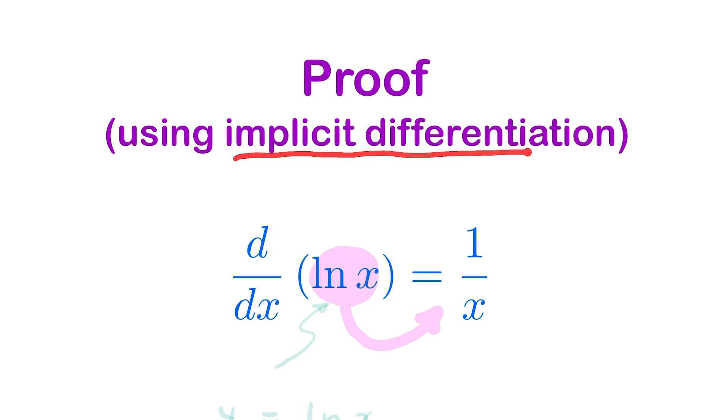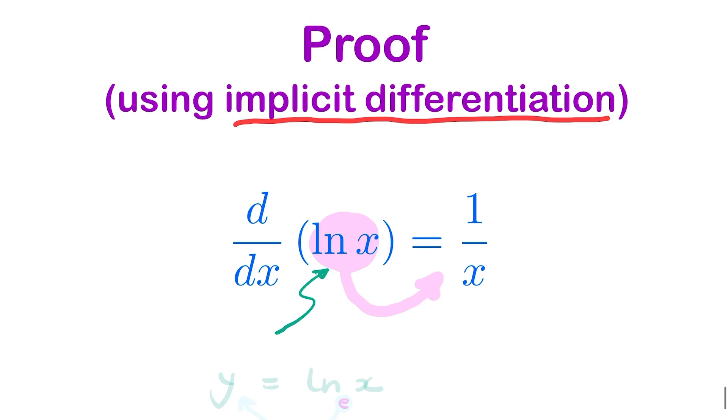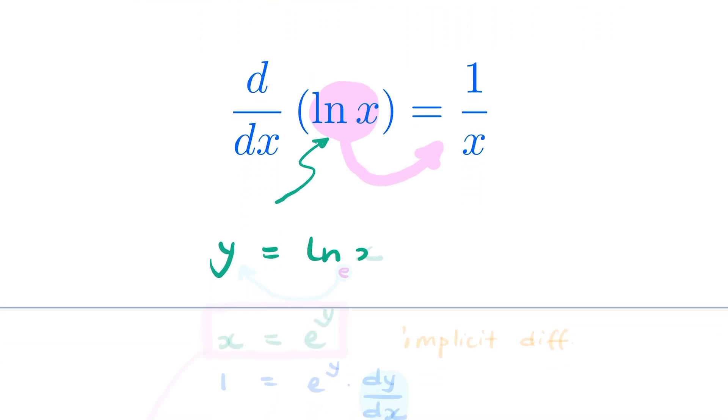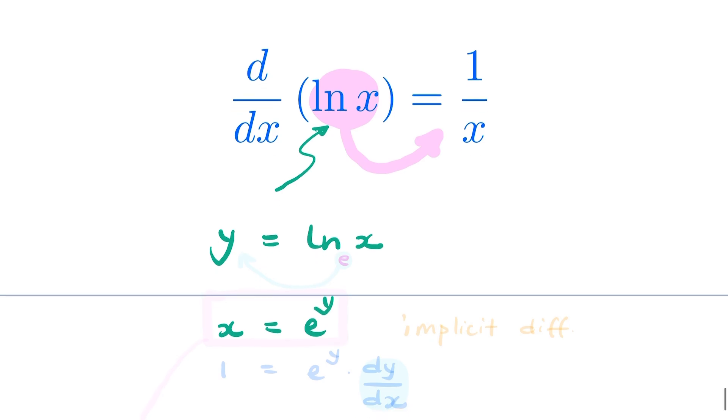If we let y equals ln x, then we can find x in terms of y by writing x as e to the power y.